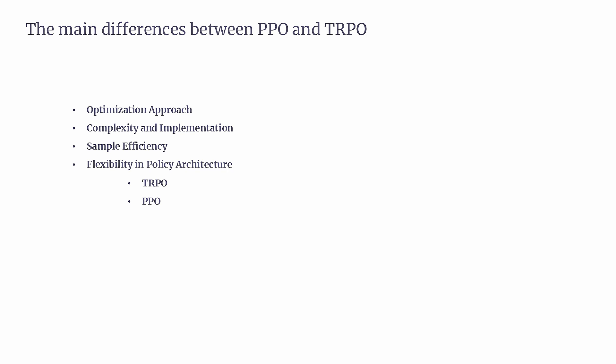This flexibility allows PPO to adapt to diverse environments and designs. Fifth, exploration and exploitation. The KL divergence constraint in TRPO ensures updates are conservative, which promotes stability, but may limit exploration if not properly tuned. PPO strikes a better balance: the clipping mechanism allows for controlled exploration, enabling the agent to test new strategies without risking overly aggressive updates that could destabilize learning. In summary, PPO simplifies TRPO by replacing the complex KL constraint with a clipping mechanism, making it easier to implement and more flexible. PPO is more sample efficient, less sensitive to hyperparameters, and achieves consistent performance across tasks, making it a practical and popular choice for many reinforcement learning applications.